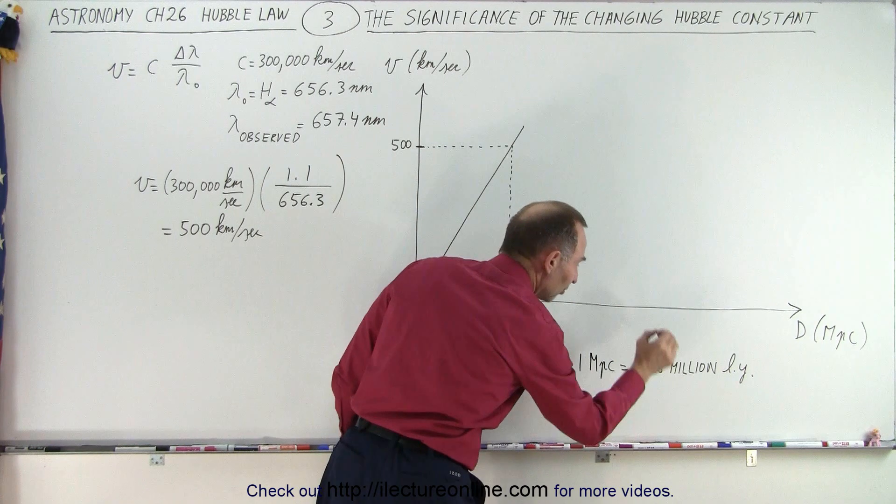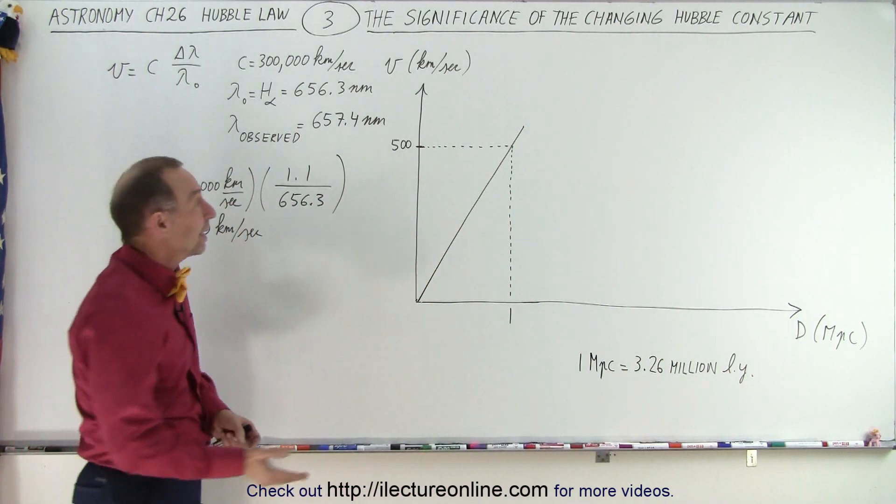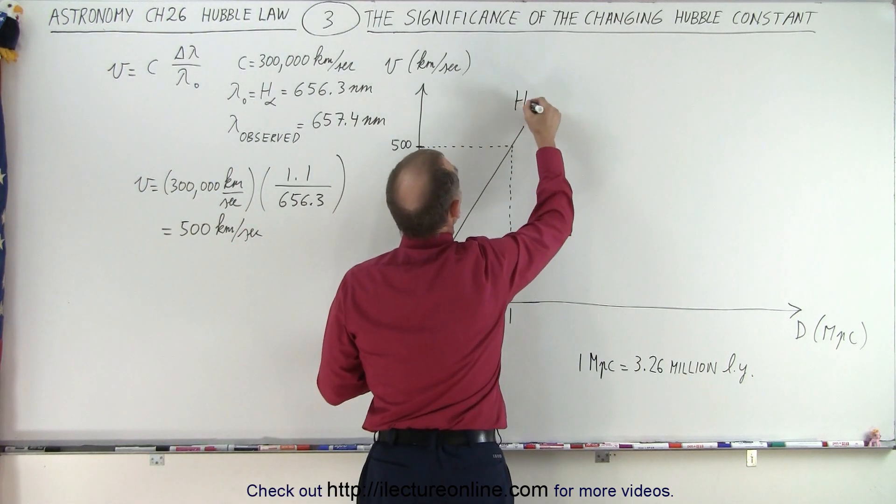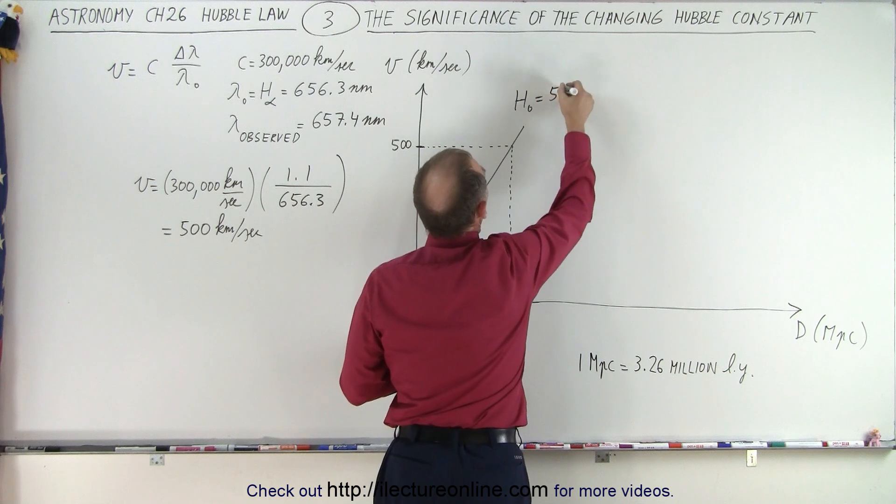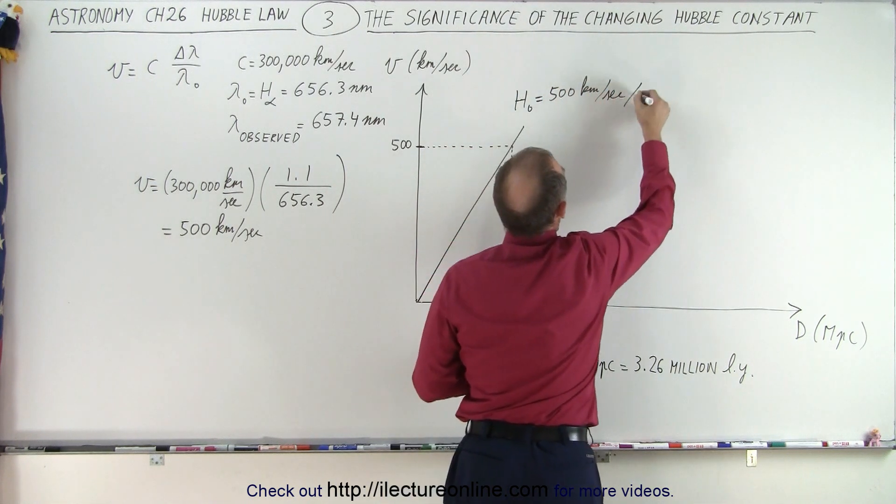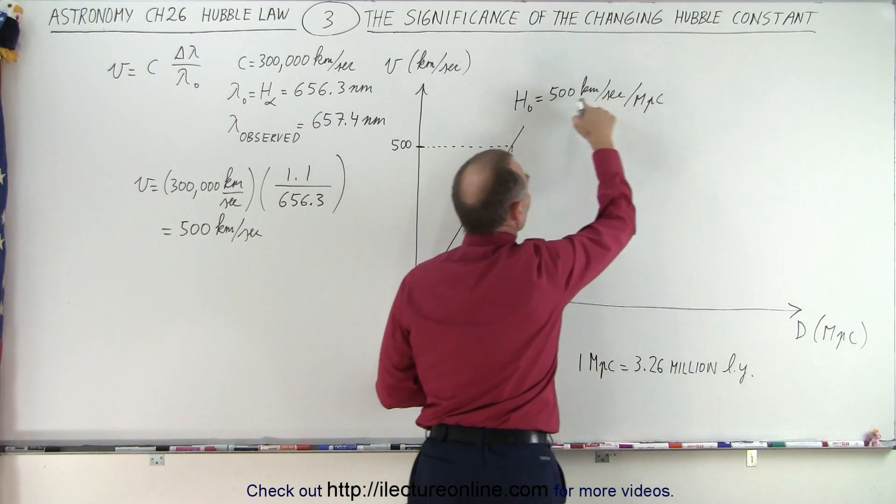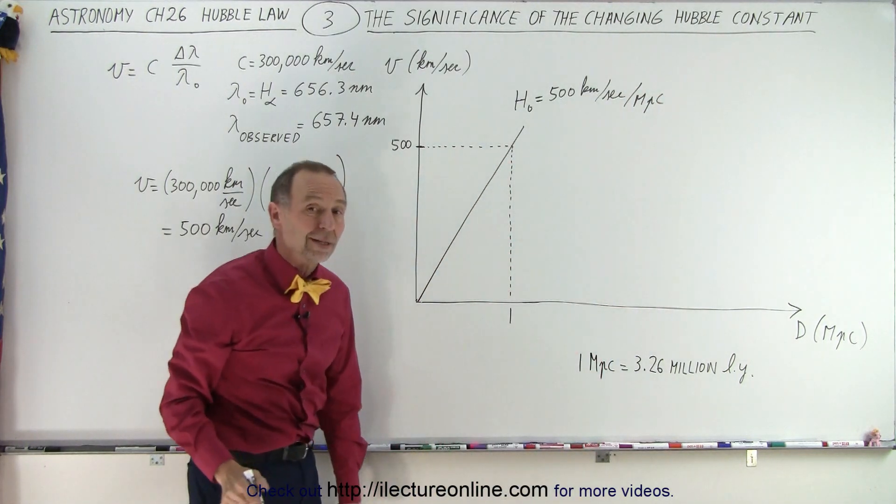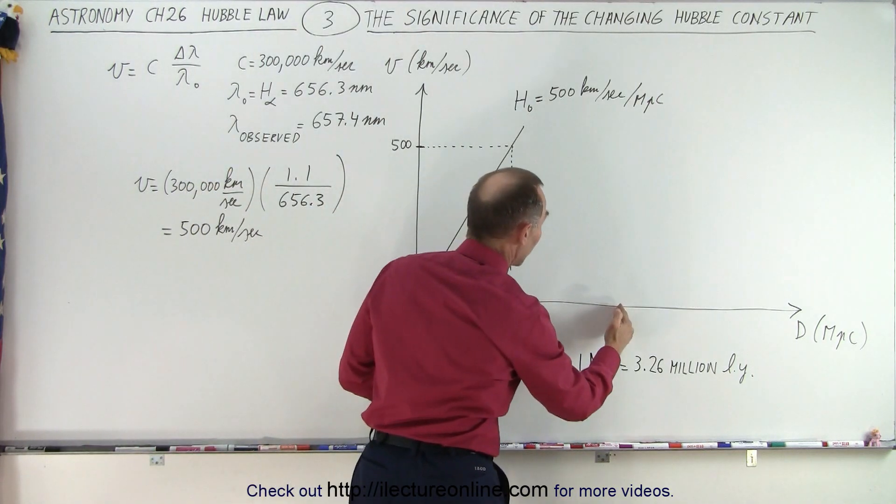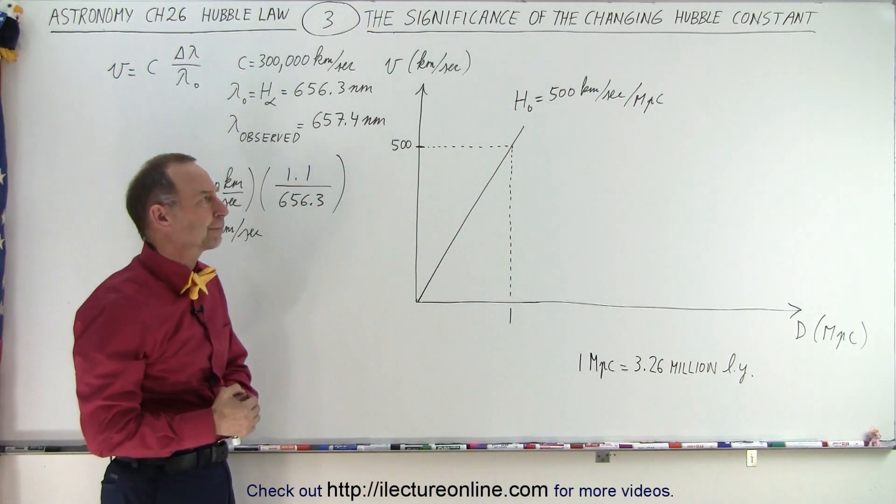There it is. The galaxy is one megaparsec away, meaning it's 3.26 million light years away. So that's the assumption, presuming that the Hubble constant that we have, that in this case, H sub-naught is equal to 500 kilometers per second per megaparsec, which means for each 1 megaparsec distance it moves at 500 kilometers per second, which means if it was 2 megaparsecs away, that would be right here, it would be moving at 1,000 kilometers per second.